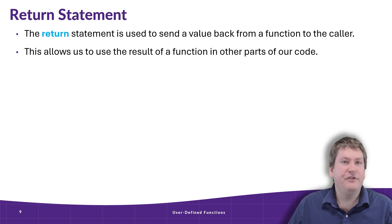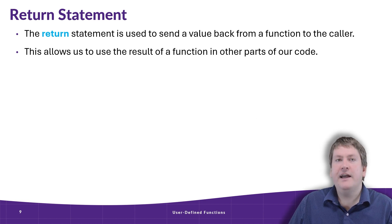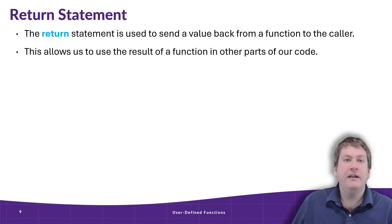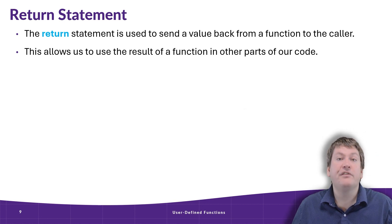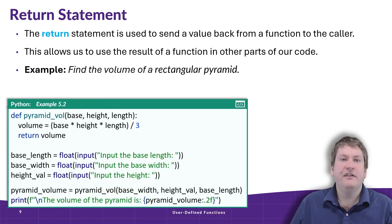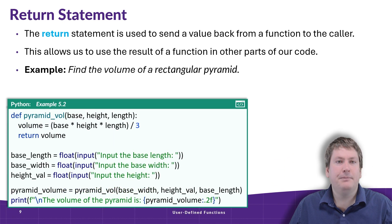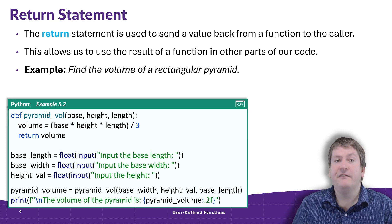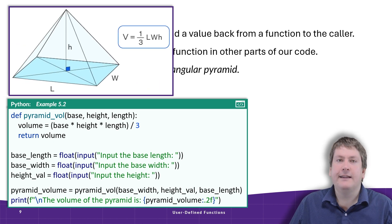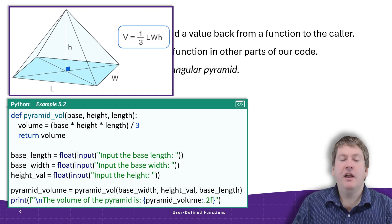Another thing about functions we have to mention is the return statement. This is how we can send values back from a function to the caller. In that last example, the function was only printing things out to the terminal — it had no return value. Functions already built into Python, like the pow function, return a value back that we can store in a variable. The way we tell Python that a function returns a value is with the return keyword. Here we have an example that's a function finding the volume of a rectangular pyramid. The equation is fairly straightforward: volume equals length times width times height times one-third.